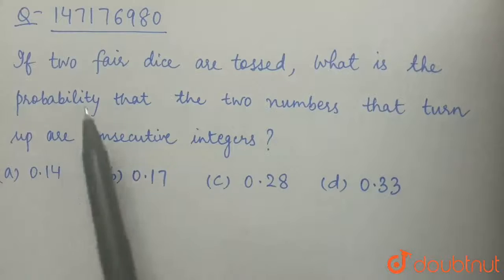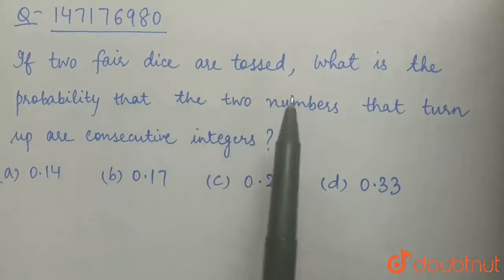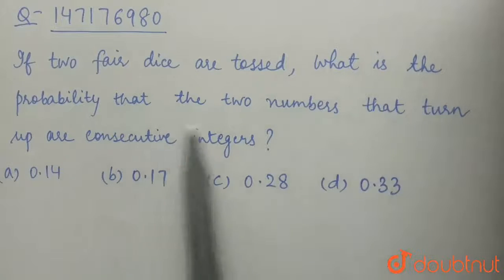Our question is: if two fair dice are tossed, what is the probability that the two numbers that turn up are consecutive integers? Options are A 0.14, B 0.17, C 0.28, and D 0.33.